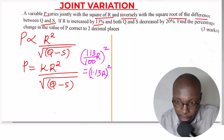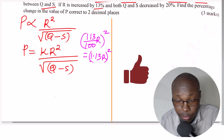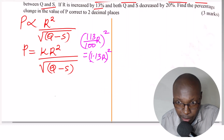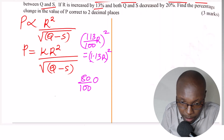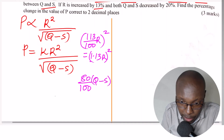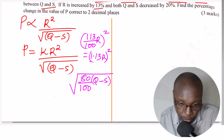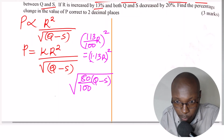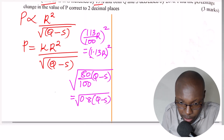For Q and S, they are decreased by 20 percent. Decreasing by 20 percent means it was 100 percent; subtract 20 to get 80 percent. So the new values are 80 over 100 times Q and S, which simplifies to 0.8Q minus S under the square root sign.